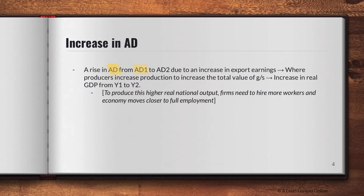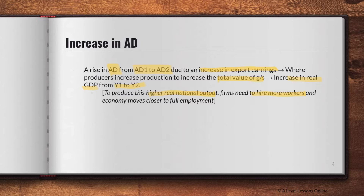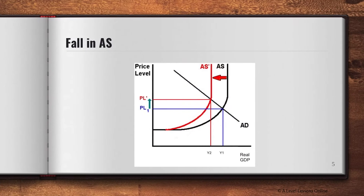A rise in AD from AD1 to AD2 due to an increase in export earnings means producers will increase production in order to increase the total value of goods and services, causing an increase in real GDP from Y1 to Y2. In order to produce this higher national output, firms would need to hire more workers and more factors of production to cope with this increase in demand. This would cause the economy to move closer to the full employment level, which is the top part of the AS curve.